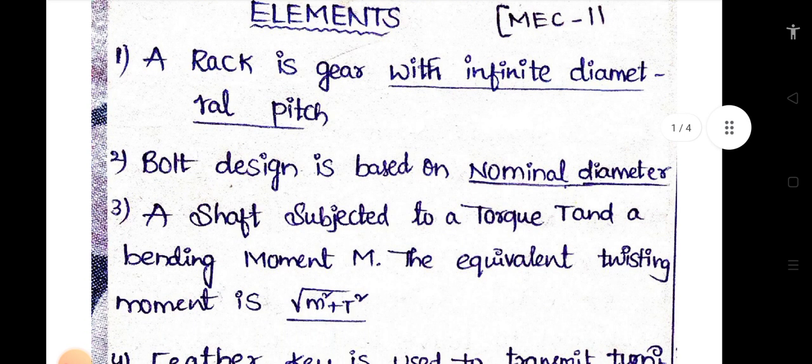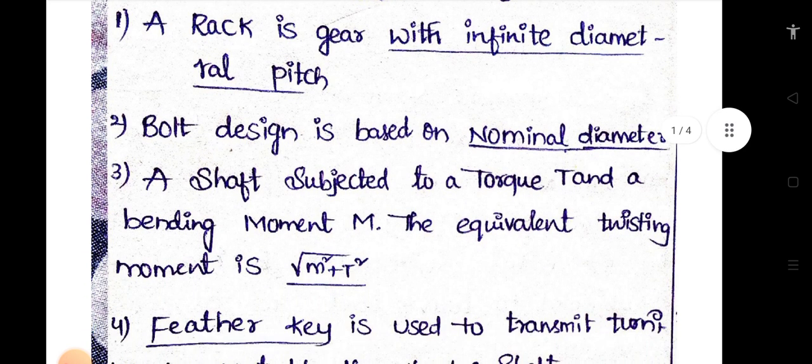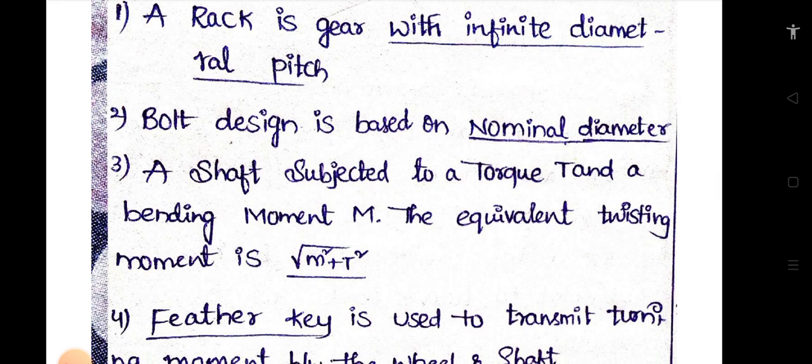Bolt design is based on nominal diameter. A shaft subjected to a torque T and bending moment M, the equivalent twisting moment is root over M square plus T square.